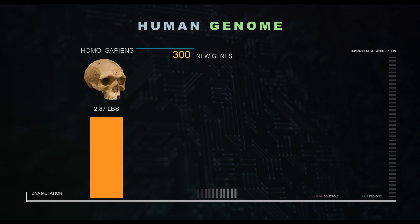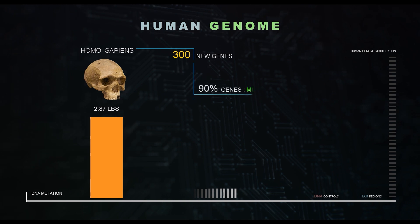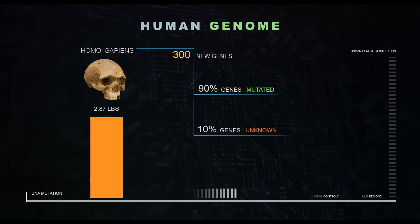The human genome acquires 300 new genes not present in monkeys. Of these, 90% are genes which have mutated during duplication. The origins of the other 10% of our genes remain a mystery.